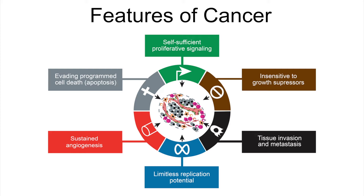The second is insensitivity to anti-growth signals. Normal cells, when they have grown or divided enough, will receive signals telling them to stop growing and dividing. Cancer cells are insensitive to these signals, and again that allows for uncontrolled cell division and growth.